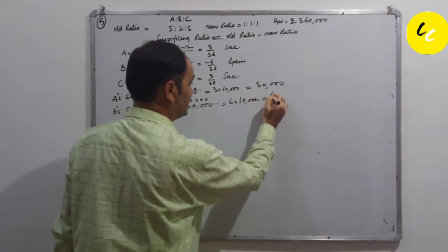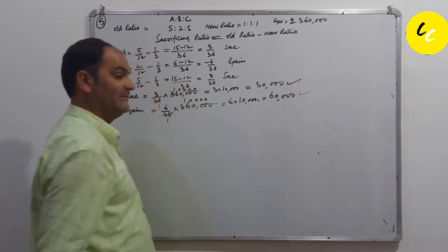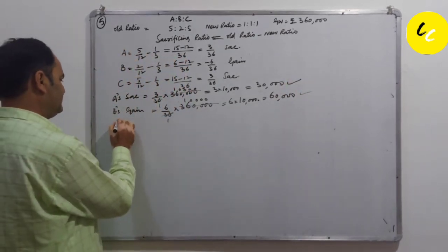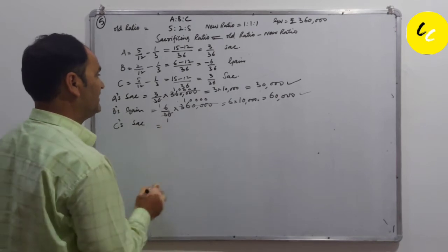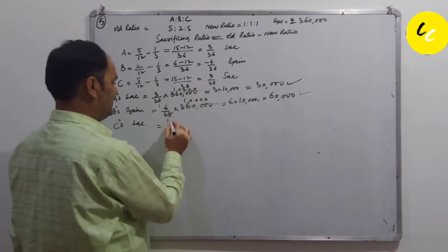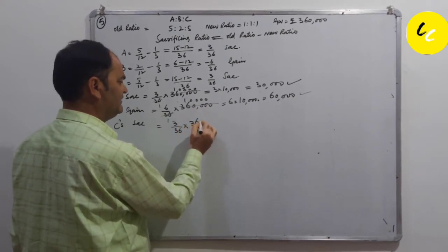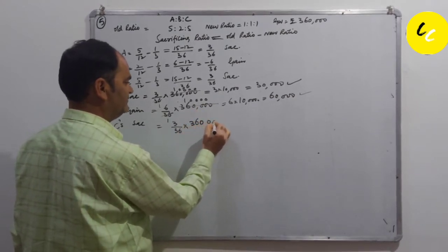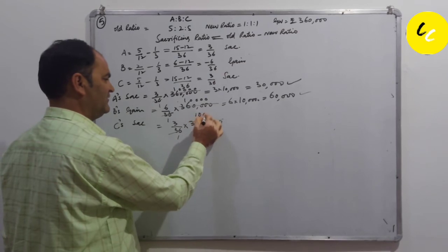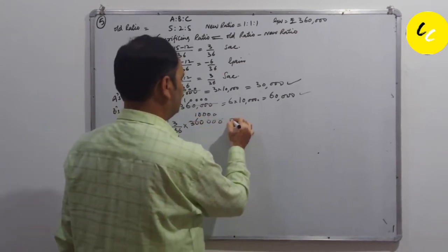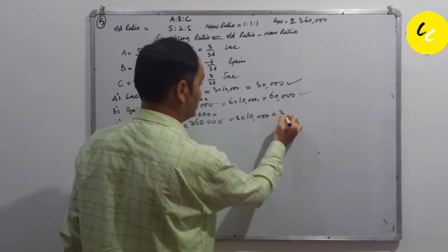Here it is 30,000 and here 60,000. Now C's sacrifice is equal to 3 by 36 again into goodwill, that is 3,60,000, that is 3 into 10,000, which is equal to 30,000 again.